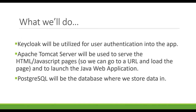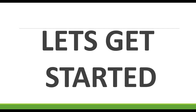Keycloak will be used for user authentication into this chat application. The Apache Tomcat server will serve the HTML/JavaScript pages so we can go to a URL such as HTTP localhost and the context root to see those pages. Tomcat will also launch the Java web application that talks to the database, and PostgreSQL will store the chat information. The code is already created — I'll copy and paste it and explain as we go.